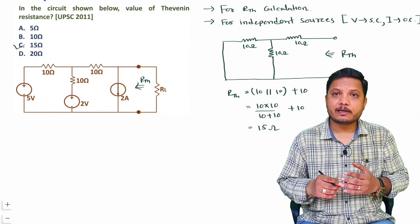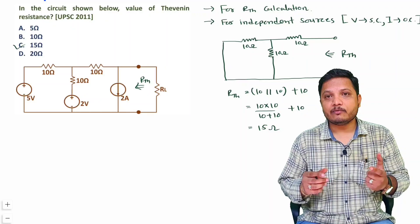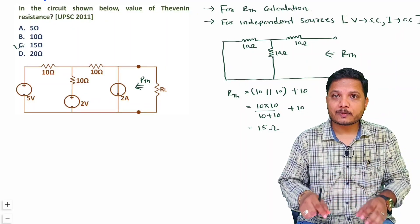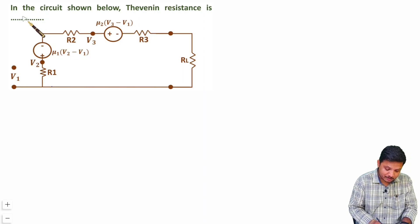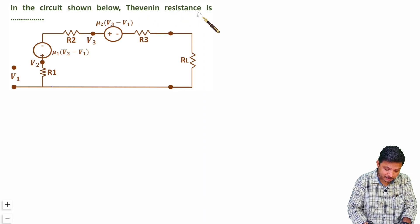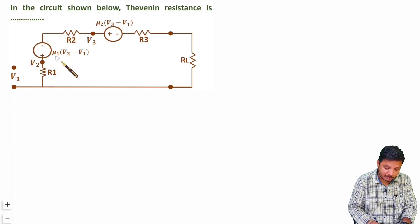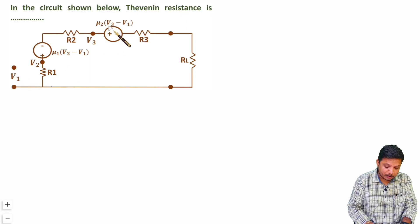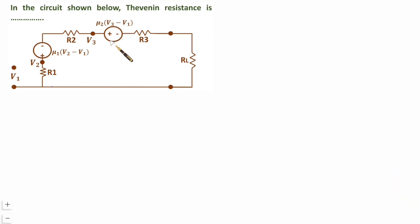Now I'll explain a very interesting question involving dependent sources. In this circuit we need to find Thevenin's resistance. The circuit has a dependent voltage source with value μ1(V2 − V1), where V2 is the voltage at one node and V1 at another. There is also a dependent voltage source with value μ2(V3 − V1). We need to find Thevenin's resistance for this dependent source case.